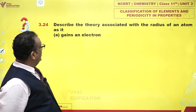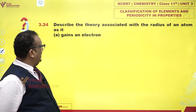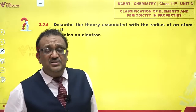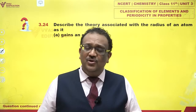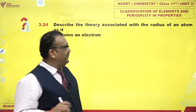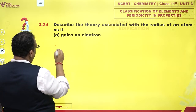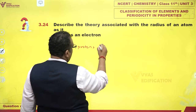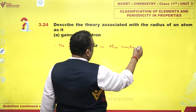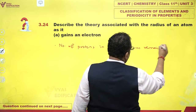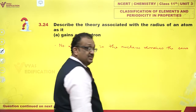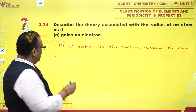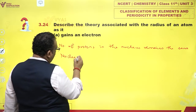Describe the theory associated with the radius of an atom as it gains an electron. If an atom gains an electron, what happens to its nucleus? Actually, nothing happens to its nucleus — the nucleus remains the same. As an atom gains an electron, the number of protons in the nucleus remains the same.